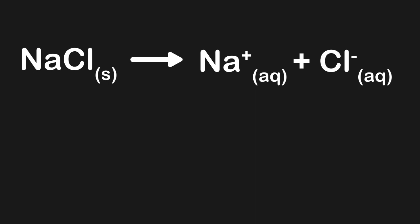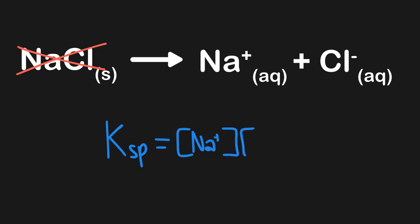Now let's turn towards an example in general chemistry. Here we're going to be looking at a Ksp, or a solubility value. Again, all of our K values are always the same — they'll still be equal to the concentration of products over the concentration of reactants. But remember, we're not going to include pure solids, which means that NaCl won't be included in our equilibrium constant. That means we simply take the concentration of Na⁺ ions multiplied by the concentration of Cl⁻ ions.